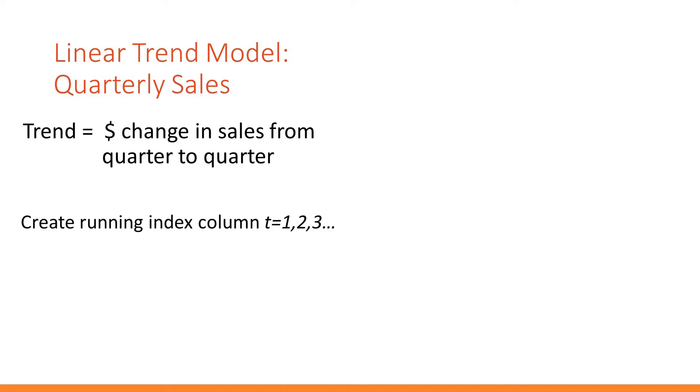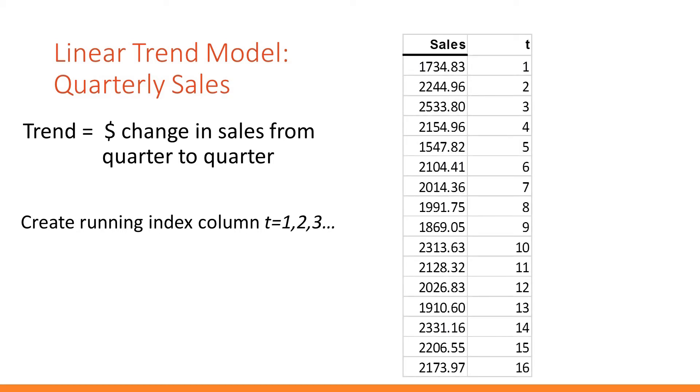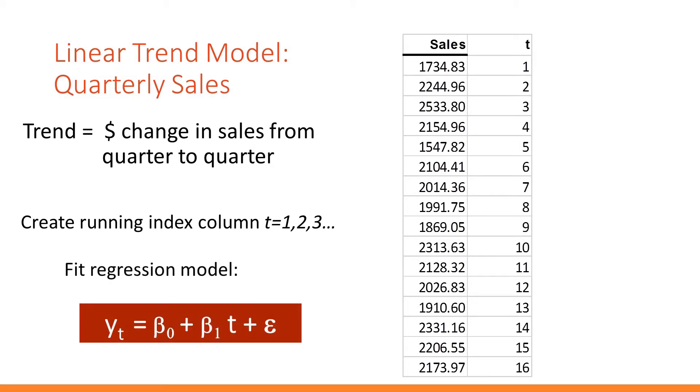To create a linear trend model, we start by creating a new column, t, which is a running index. Then, we use this new column as the single predictor in our regression, so that we have the model of sales or y sub t equals beta 0 plus beta 1 times t plus some epsilon.